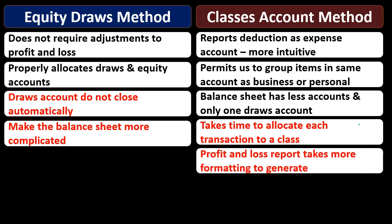The profit and loss report takes more formatting to generate under the classes method. It's possible to generate essentially the same profit and loss for the business side using classes, but we need to be more careful and take a few more steps to format the report to eliminate personal expenses when we just want to see the business profit and loss.